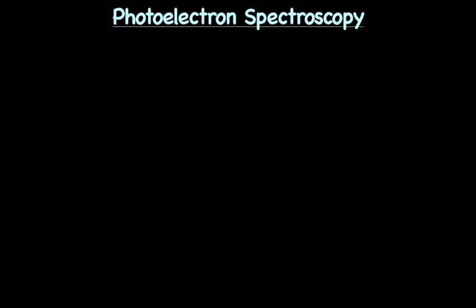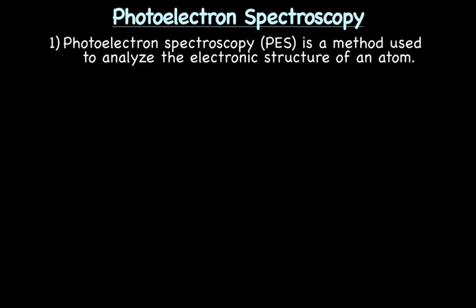Let's start with what is photoelectron spectroscopy. Just a really quick overview. Photoelectron spectroscopy, also known as PES, which honestly is the terminology we'll usually use, is a method used to analyze the electronic structure of an atom. So to help figure out the arrangement of the electrons.